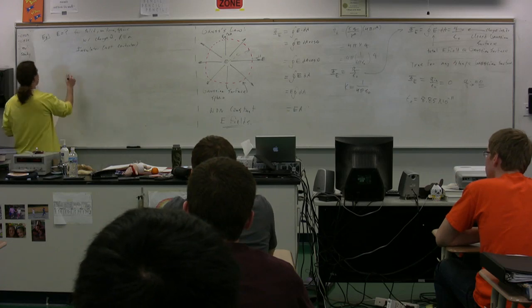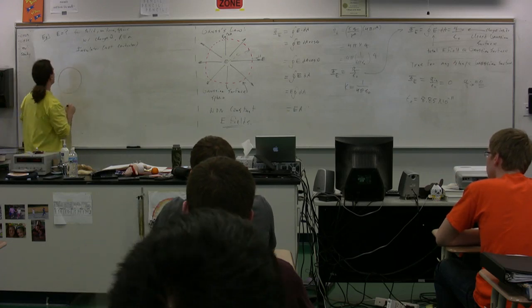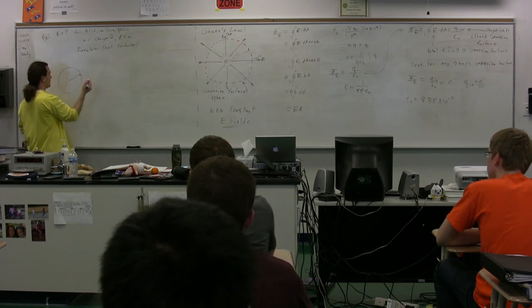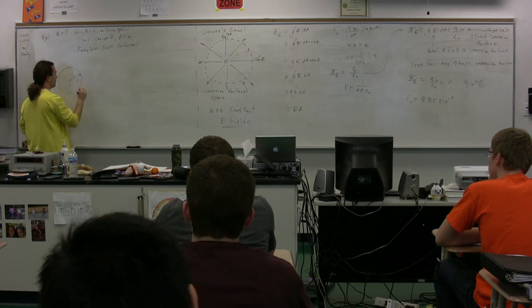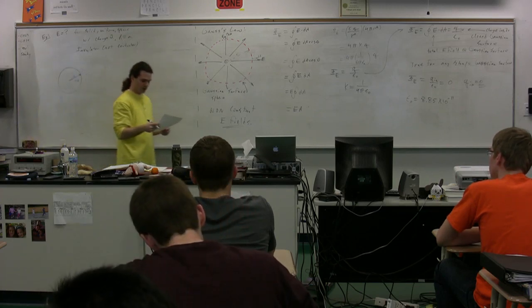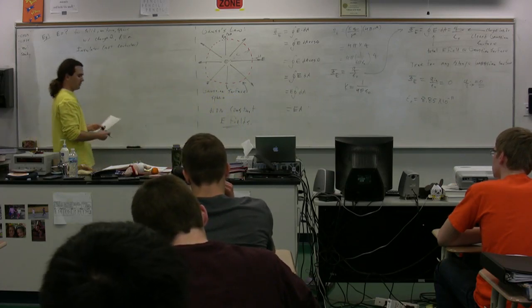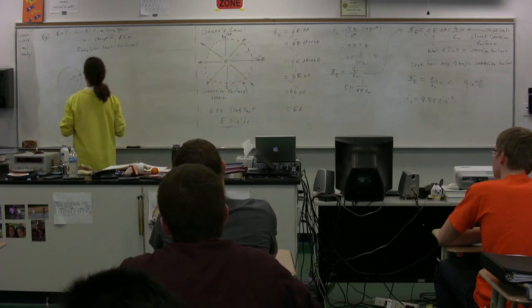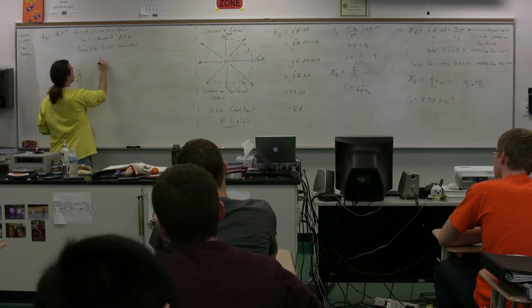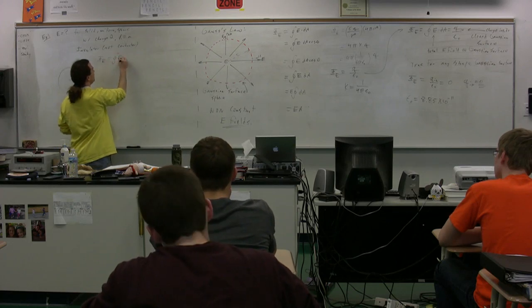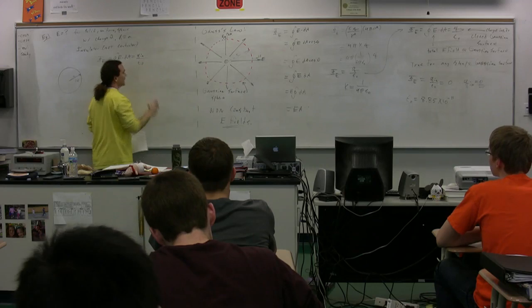So, what we have is a sphere with a radius A, and it has a charge positive big Q. That's the charge of this whole thing. And what we're going to start out by doing is figure out the electric field that exists outside the sphere. So, we're going to use Gauss's law, which is the electric flux is equal to the closed surface integral of E dot dA, which is equal to the charge inside our Gaussian surface divided by E naught.